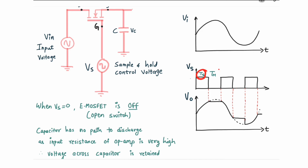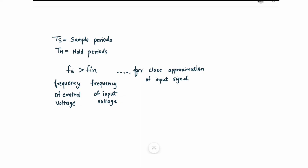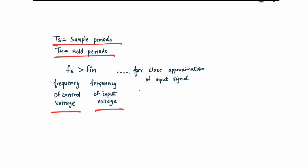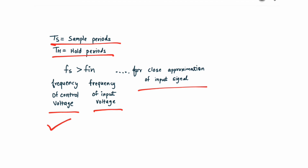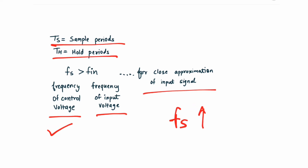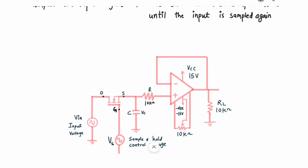Ts is the sampling period and Th is the holding period — when the output is constant. Apart from this, what should be the relation between fs and fn? fs is the frequency of the control voltage and fn is the frequency of the input signal. If you want a close approximation of the input signal — close similarity between output and input — then fs should be greater than fn. This is the thumb rule: as you increase fs, the closeness increases.